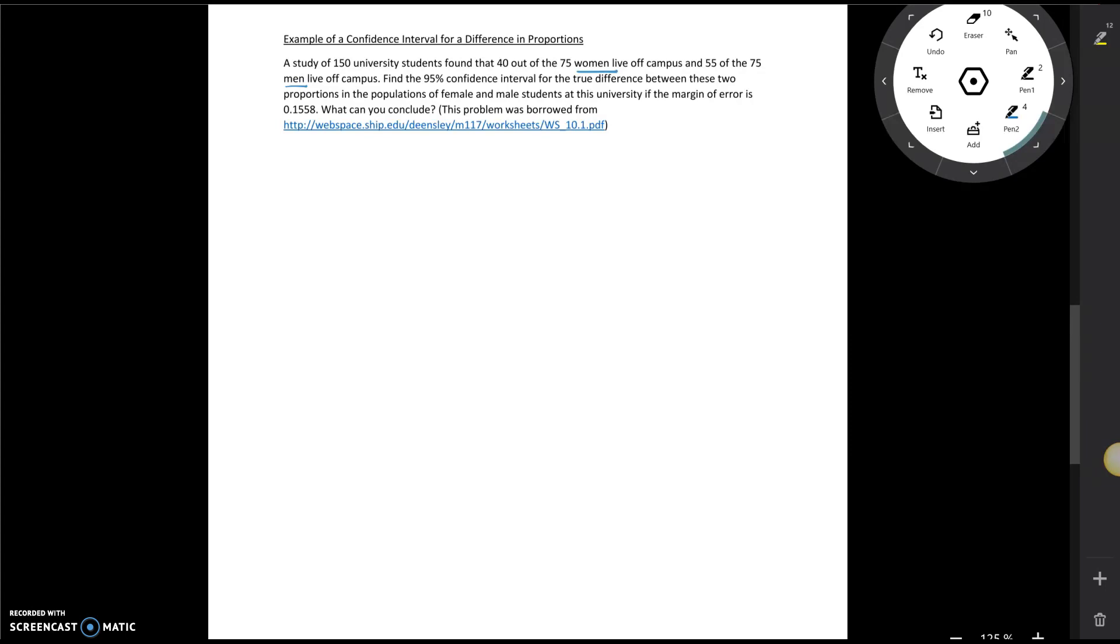And it goes on to say find the 95% confidence interval for the true difference between these two proportions in the populations of female and male students at this university if the margin of error is 0.1558. What can you conclude?